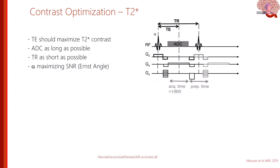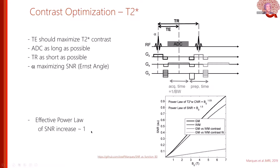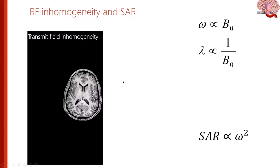When you put all these things together, there is an important result: if you want to optimize for T2-star contrast — used for BOLD fMRI or QSM — you want your echo time close to the T2* of the tissue of interest, the acquisition as long as possible, and the TR as short as possible. You want a flip angle that maximizes SNR, typically the Ernst angle. Taking all this into account, including longer T1 at high field, the effective SNR increase with field drops to about linear — or even lower for some contrasts.